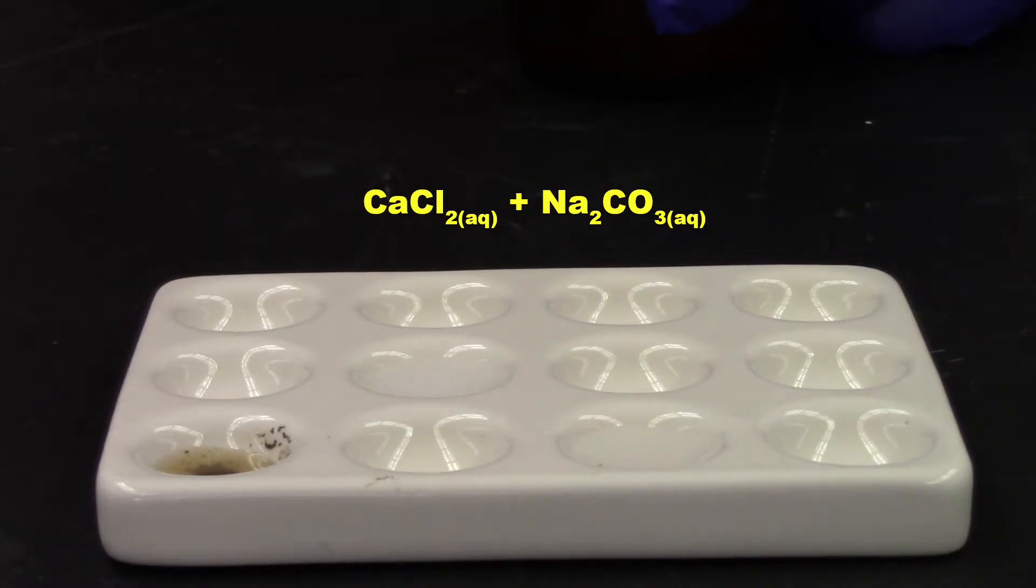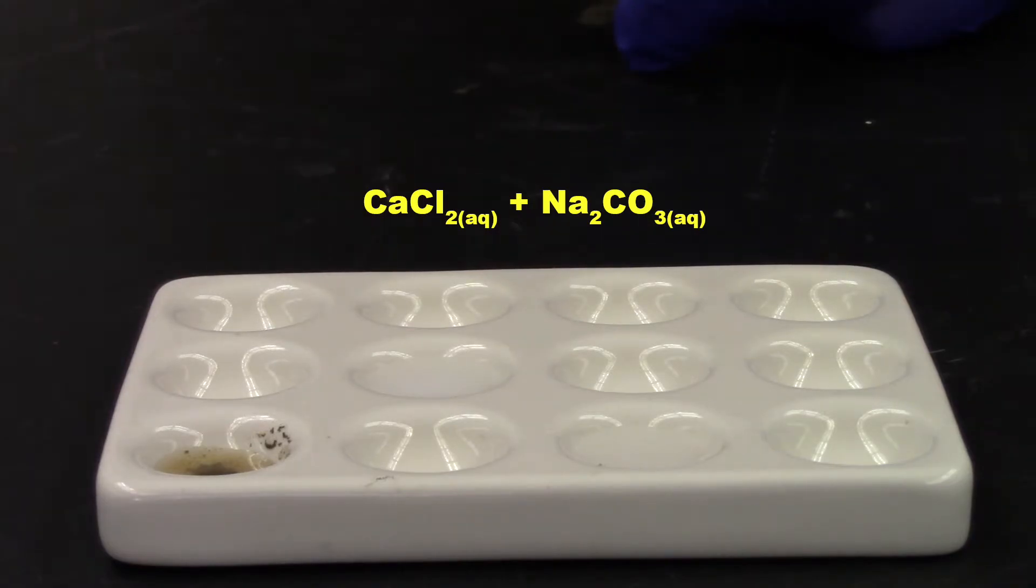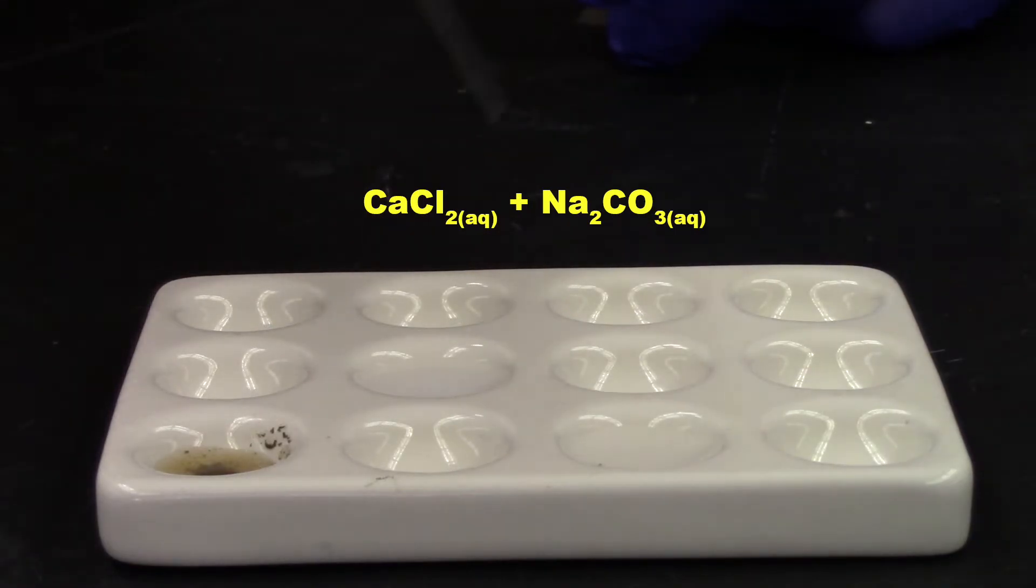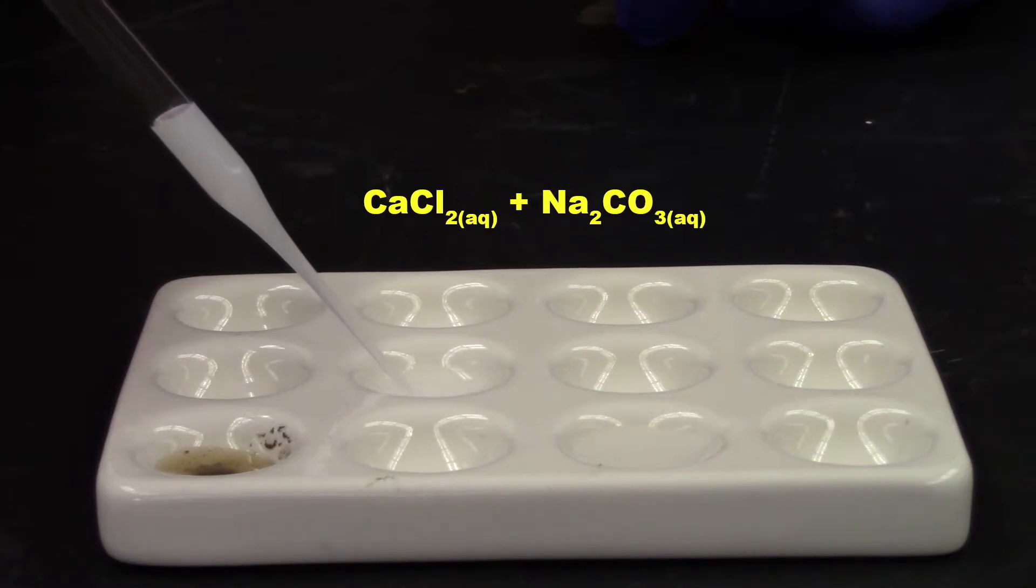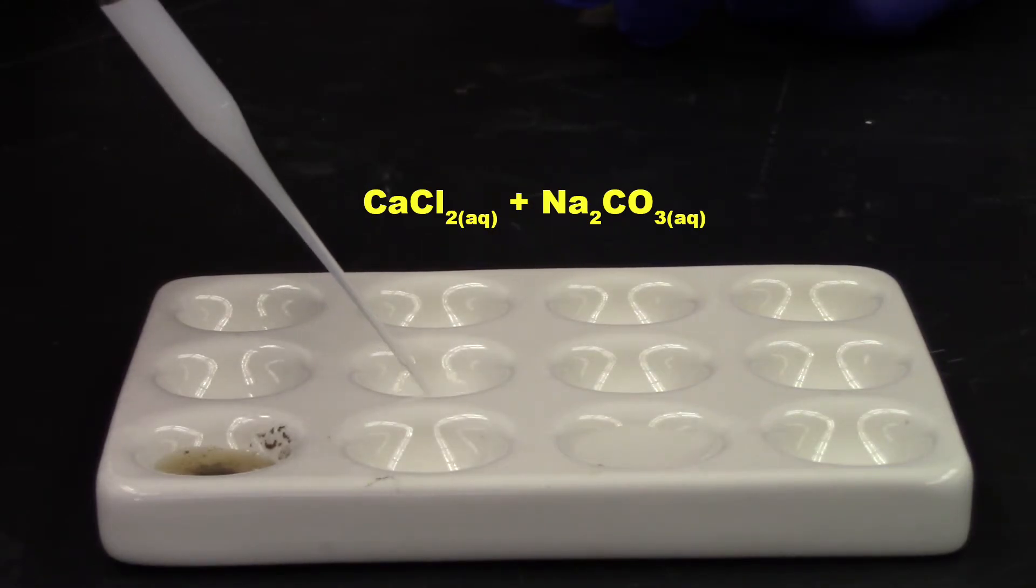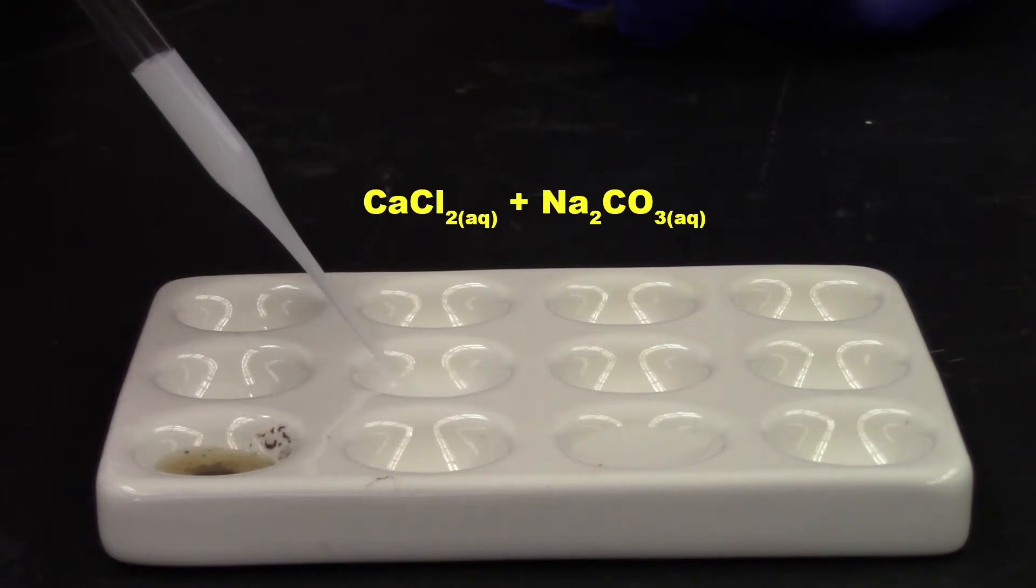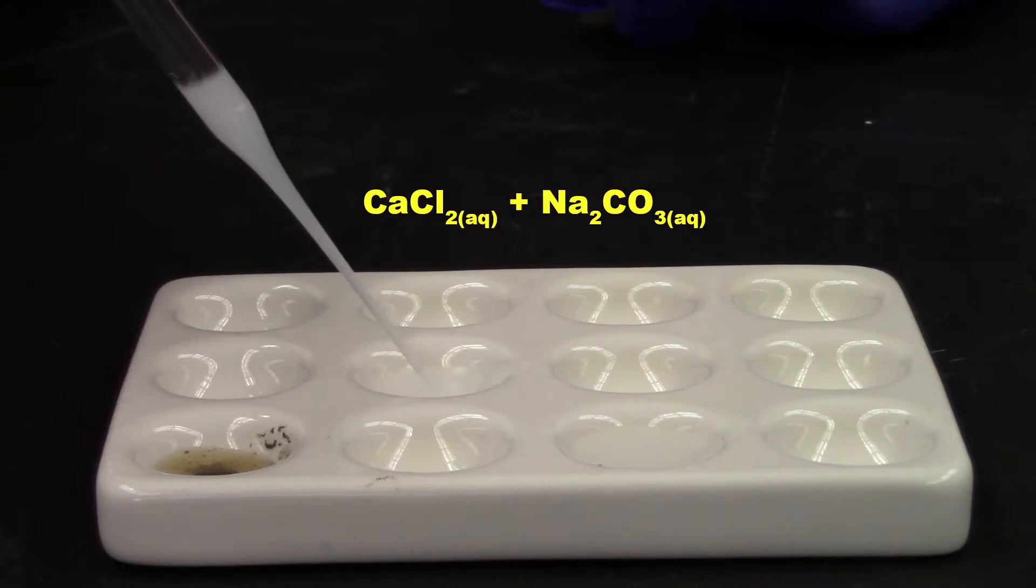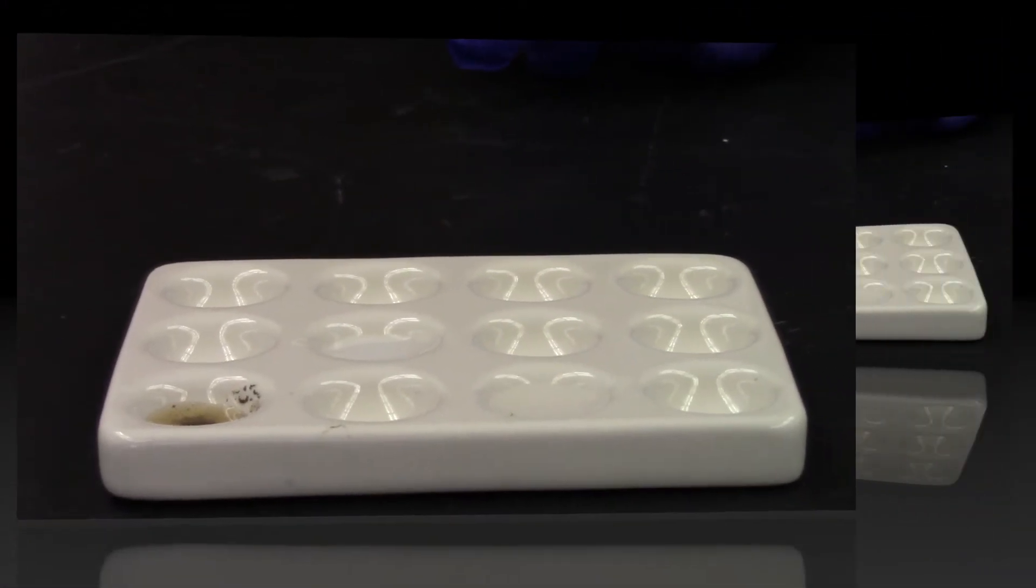All right. Not a lot happening, it appears. But let's take our closer look. Always take a closer look. Ah, look at that. Clear, colorless liquids. Now we have a milky white liquid. There's a precipitate forming there. So this reaction definitely occurs here because you have a solid formation. And that is really cool.